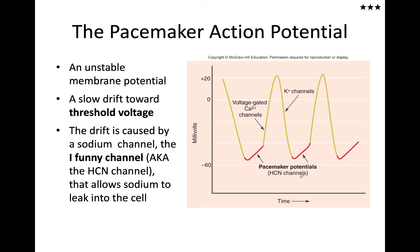The pacemaker potential is generated in the SA node, AV node, and Purkinje fibers. The rhythm is different for each. In the SA node, in the absence of any stimulation from the sympathetic or parasympathetic nervous system, the SA node would generate a rhythm that would cause the heart to beat about 100 times per minute.